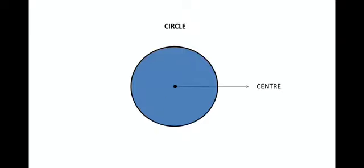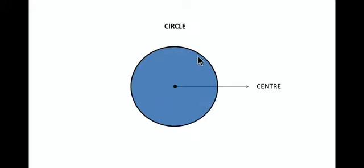Next, we have a circle. It is not a figure with linear boundaries — it has curvilinear boundaries. A circle has a center, and from the center the circle is always equally distant — the distance from the center to any point on the circle is always equal. That means the distance between the center and any particular point on the circle is always equal. This property is called equidistance from the center.